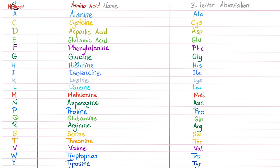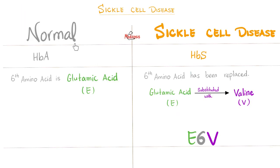Each amino acid has a name, a one-letter abbreviation, and a three-letter abbreviation. Normally, you should have hemoglobin A. Sickle cell disease patients have hemoglobin S. What's the problem? A substitution — instead of glutamic acid, now you have valine at amino acid number six.